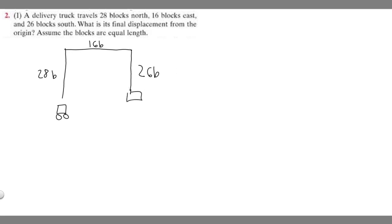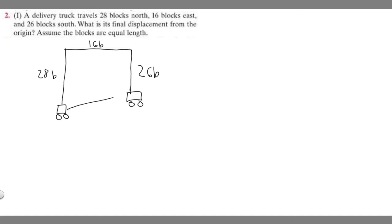So the car is going to end up here. What we're trying to find is the displacement of the car. If the car starts here and ends here, its displacement is going to be this length right here. What we want to do is form a triangle, and that's how we're going to solve our problem. So this is the length we're trying to find — if we find these two legs, we'll be able to find this length.